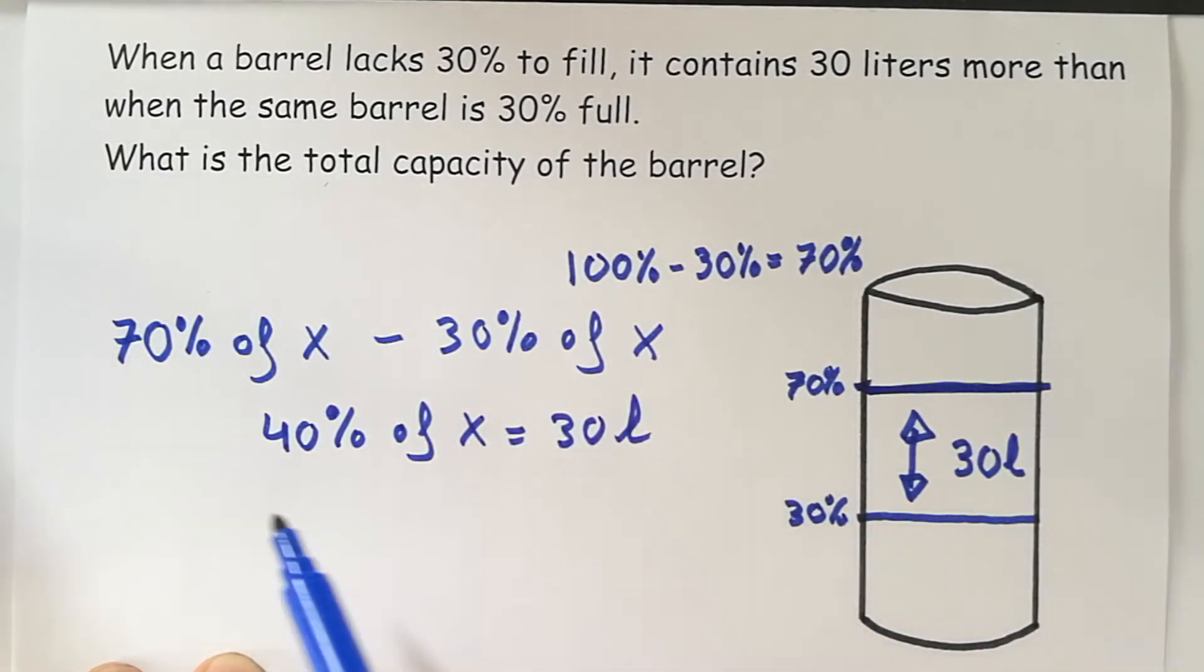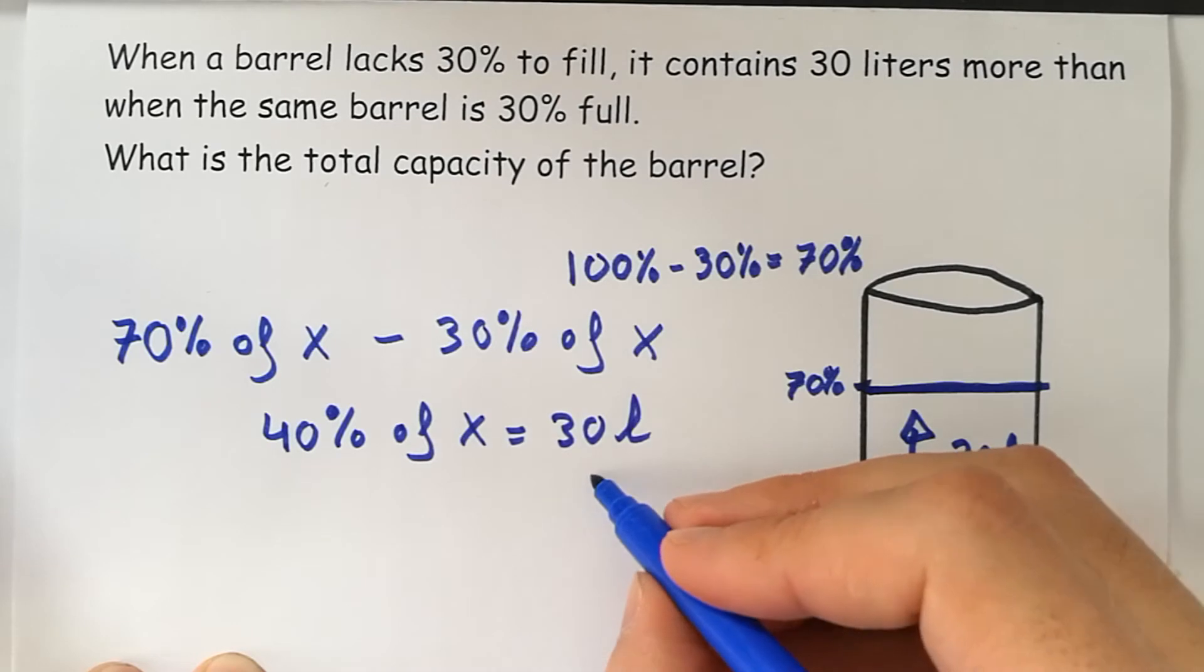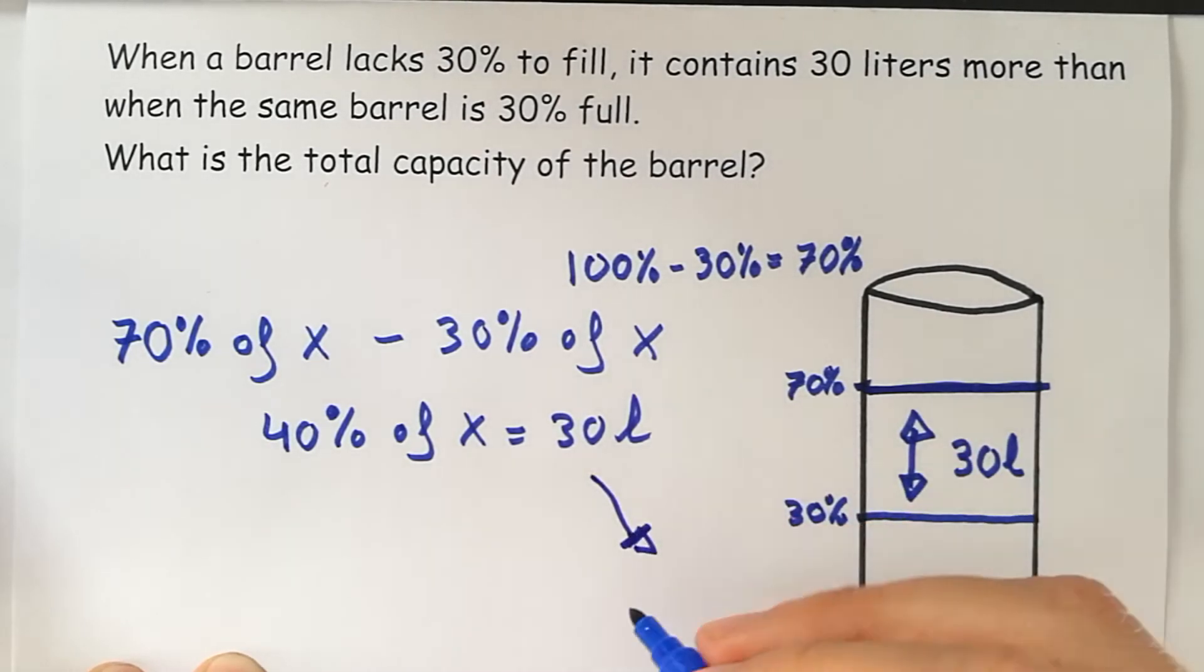If we use X, if we write this as an equation, it's very simple. It would be like 40% times X equals 30.